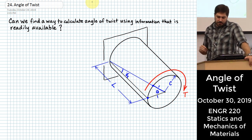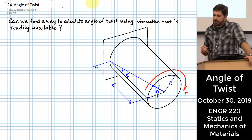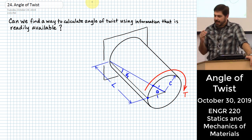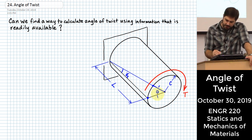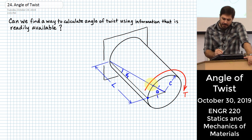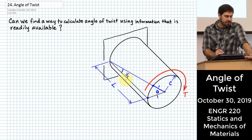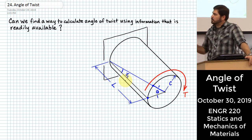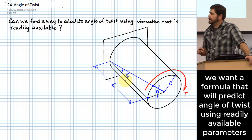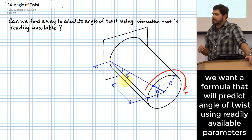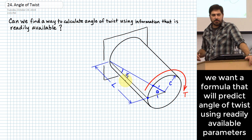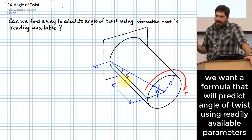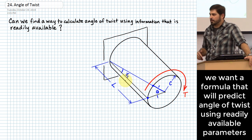You might remember from last time a picture that looked a lot like what I've got up here, where we were relating a parameter called angle of twist to the shearing strain occurring on the outer surface of this member. I wanted to put this up here so we could look at it as we try to answer the question: can we find a way to calculate this angle of twist using information readily available for a physical element?